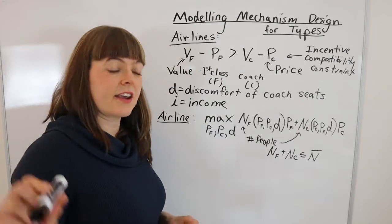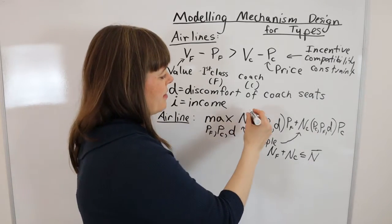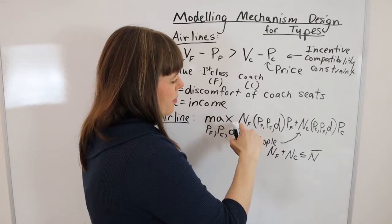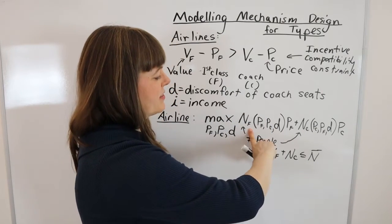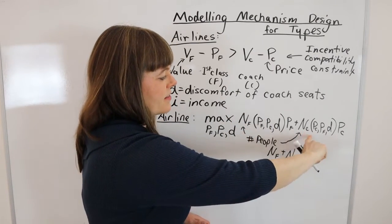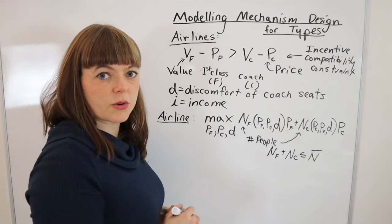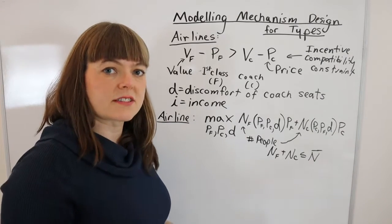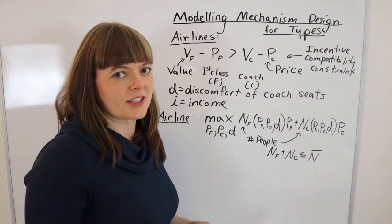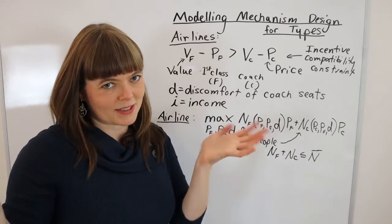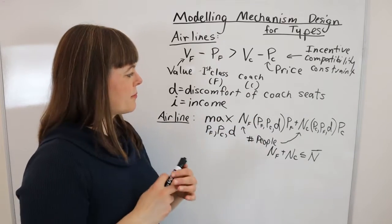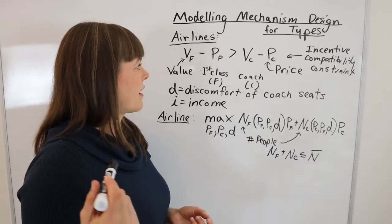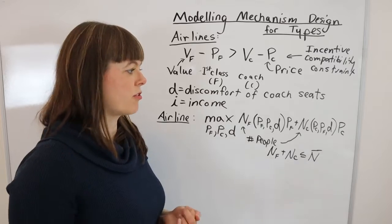The key here is recognizing that the number of people choosing first class and coach is the result of somebody else's maximization problem — the customer's. So we need to build a customer model.